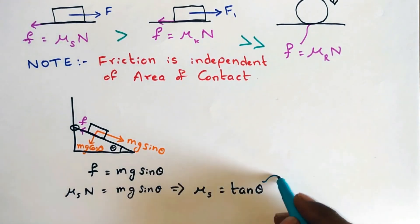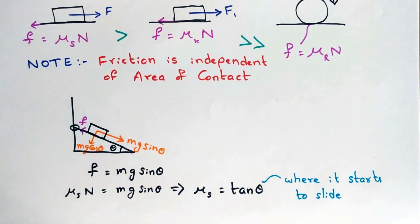Where theta is the angle of the inclined plane when the block starts to slide. Or we can also find this theta if you know mu s.